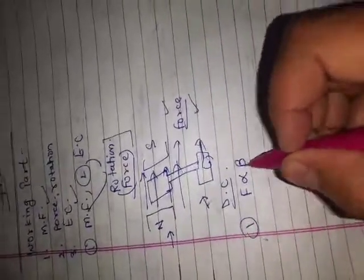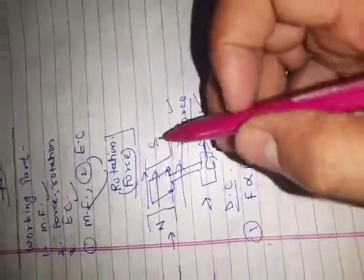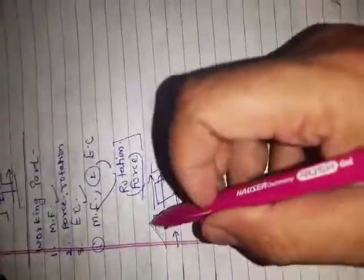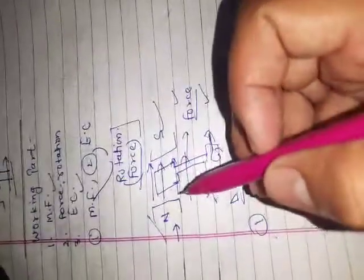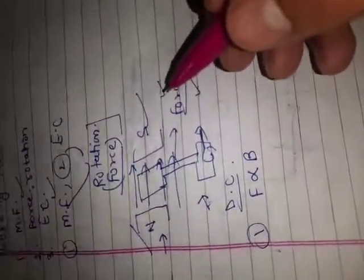This force depends on three things. Number one: this force is directly proportional to the magnetic field. If you take a stronger, higher value of magnetic field, the iron piece will show more and more rotation — we will get more force. So force is directly proportional to the magnetic field.